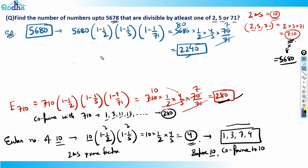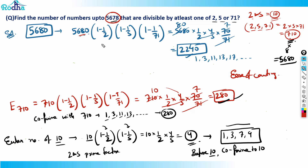These 2240 numbers are co-prime with 5680 — numbers like 1, 3, 11, 13, 17, etc. They are not multiples of 2, 5, or 71. But my target number is 5678, so I have counted two extra numbers beyond 5678.